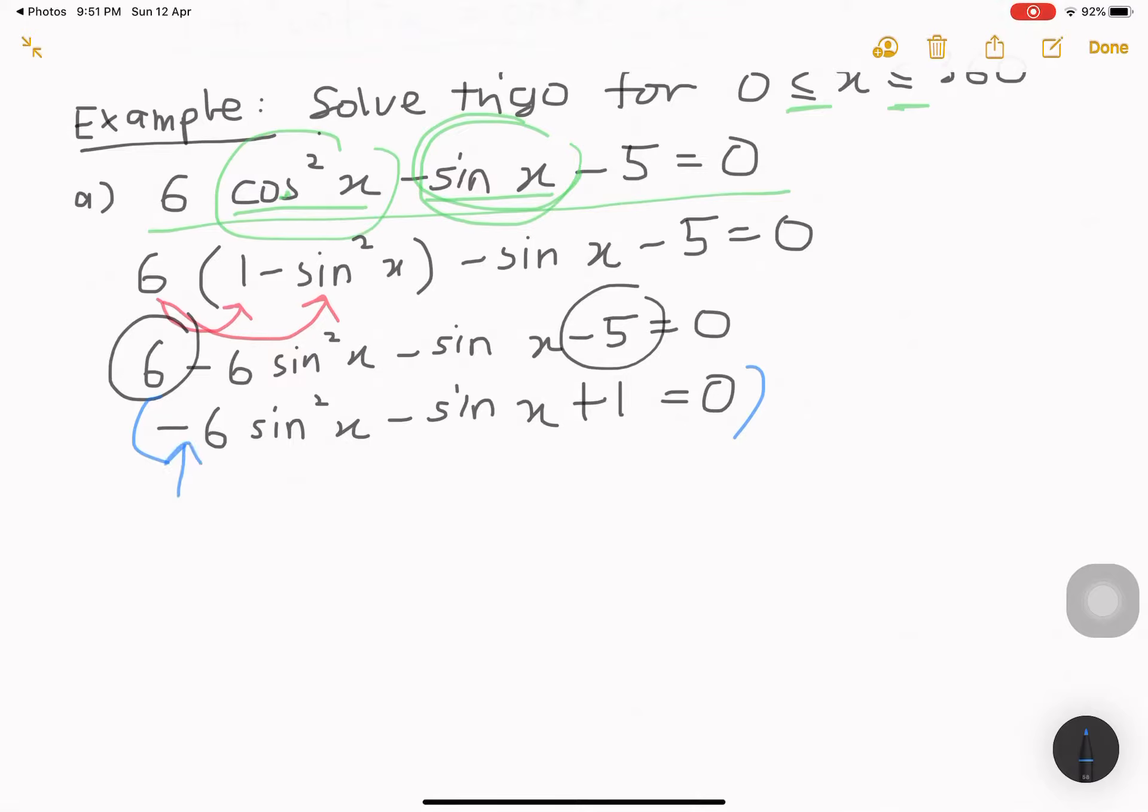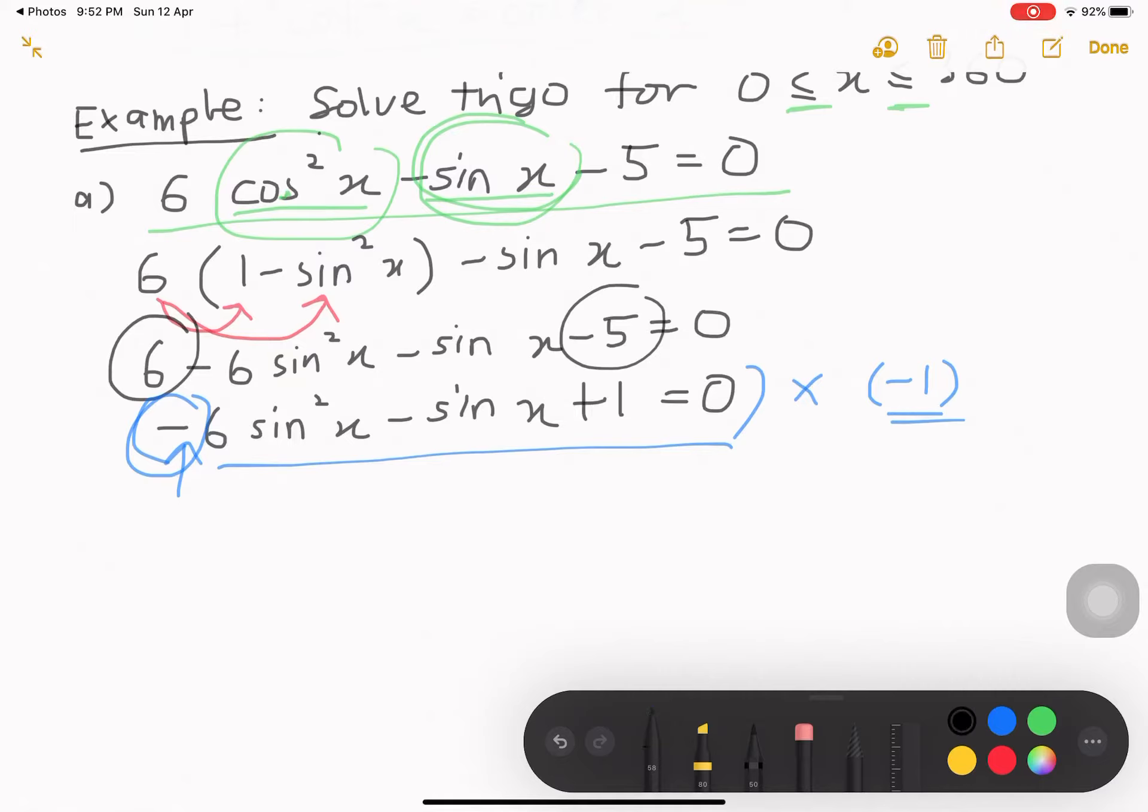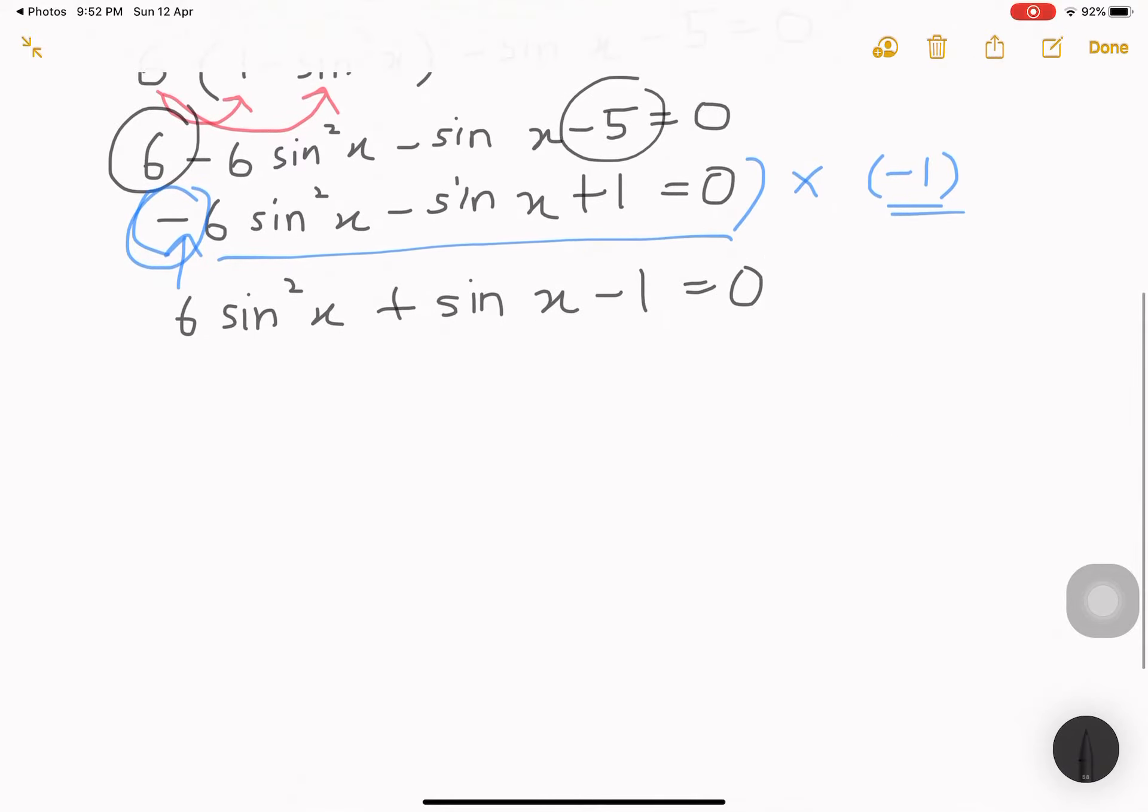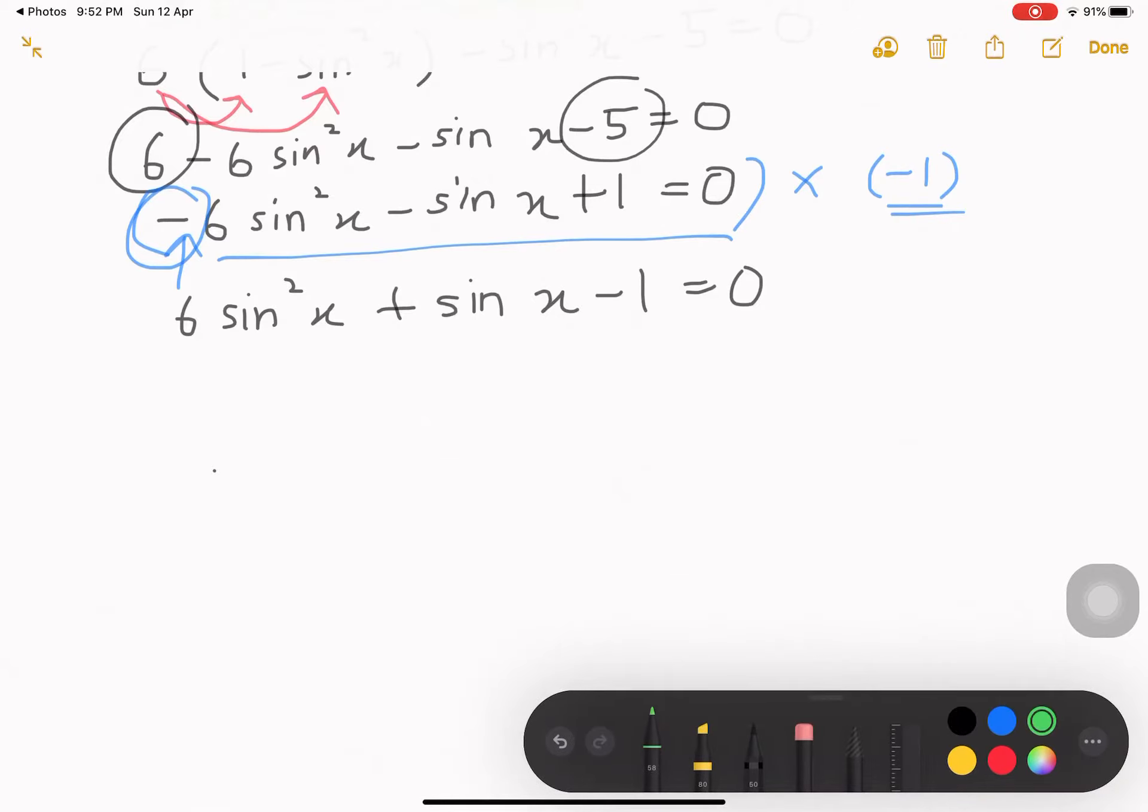Next one. This is very crucial, where you see your highest power is with negative. Basically, I always want to make it easier for me and to solve the rest of the questions by multiplying this with negative 1. If I multiply this equation with negative 1, what I get is that I will get 6 sin square x plus sin x minus 1 equals to 0. This is actually the same like quality equation, solving quality equation.